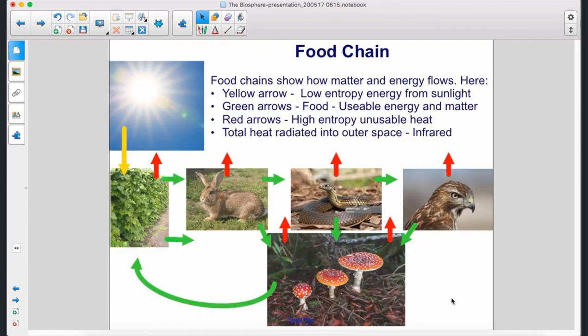Food chains show how matter and energy flows. Here the yellow arrow shows low-entropy energy from sunlight. The green arrows show food, usable energy and matter. Red arrows show high-entropy, unusable heat. And the total heat radiated into outer space is infrared.